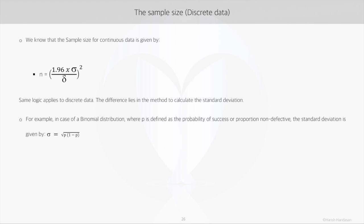As a part of the binomial distribution properties, we know that the standard deviation is given by square root of p times 1 minus p, where p is the probability of success or proportion non-defective. If we substitute this value of standard deviation in the formula, this is what we get.